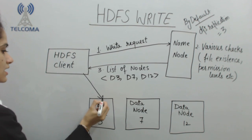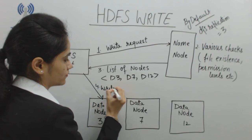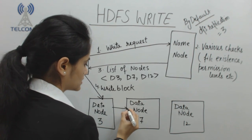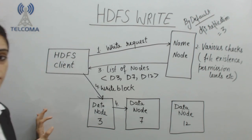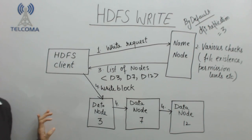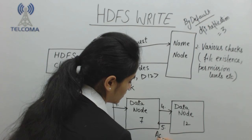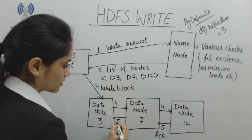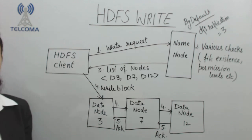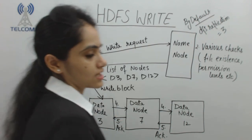After receiving the list of available nodes, the HDFS client sends a write block message. Data node 3 contacts the next node — this is message number 4, the write block message — and passes it along to the next data node. When the data is written on the nodes, they send back an acknowledgement — message number 5 — confirming that the data has been written.